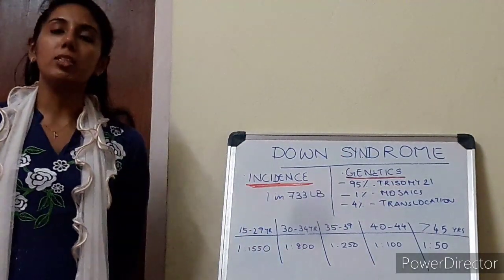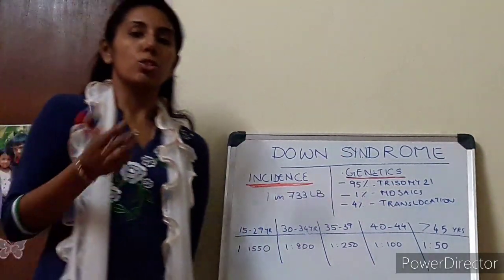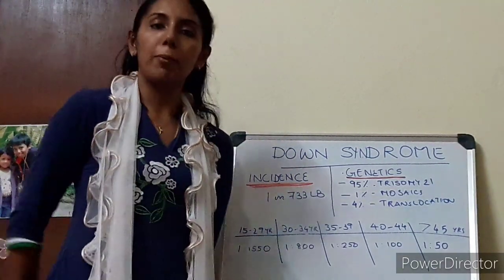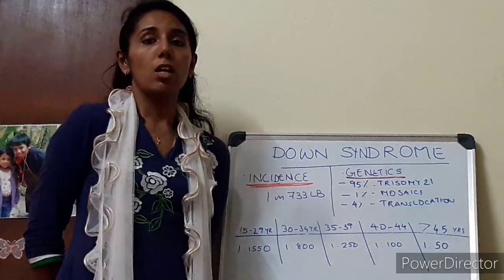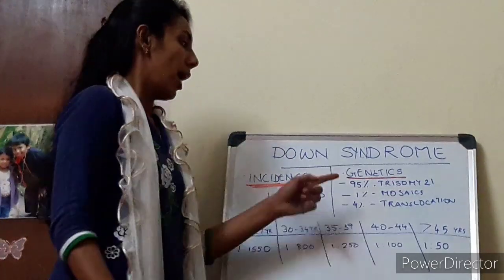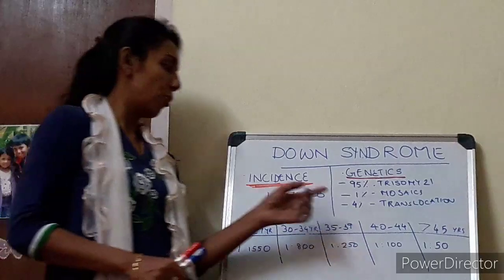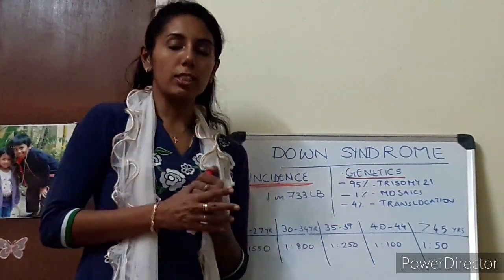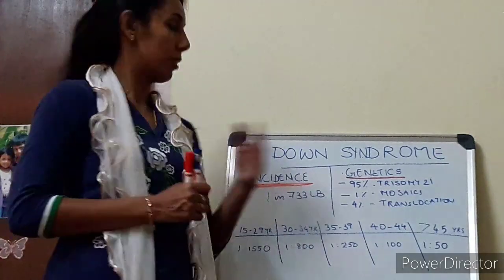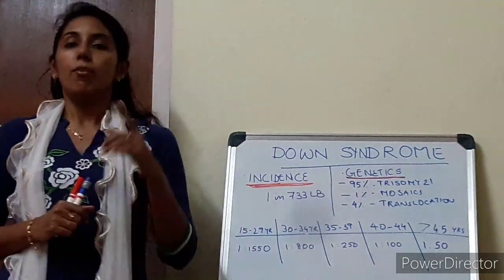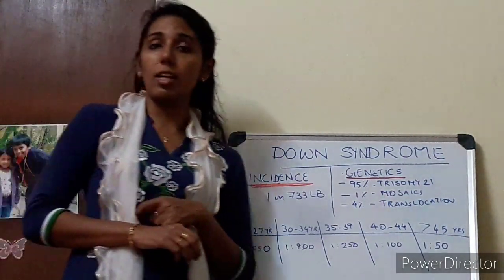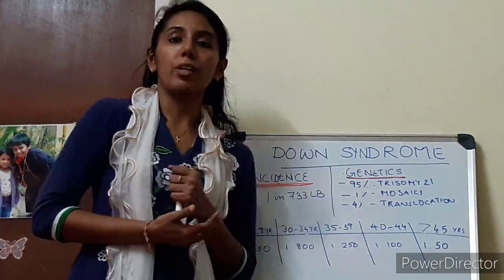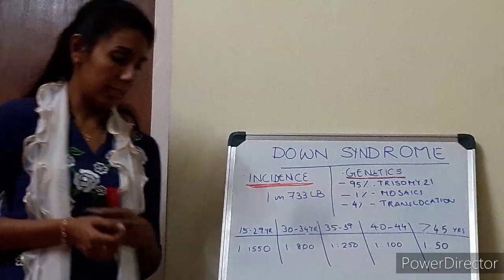Trisomy 21 happens when there is non-disjunction during meiosis. Most of the cases are due to non-disjunction happening during maternal meiosis part 1. 1% is due to mosaicism and 4% of cases are due to translocation. If you get any Down syndrome case determined to be translocation, we have to do maternal and paternal karyotype to understand the occurrence rate in future pregnancies.